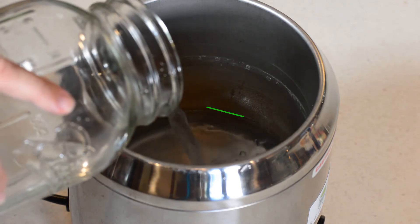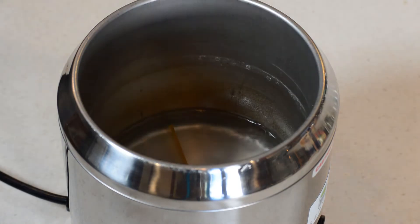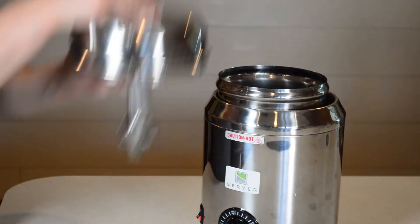Fill the basin with two and a half cups of water or up to the fill line. Insert the spacer and place a number 10 can or server's 3 quart jar into the warmer base.